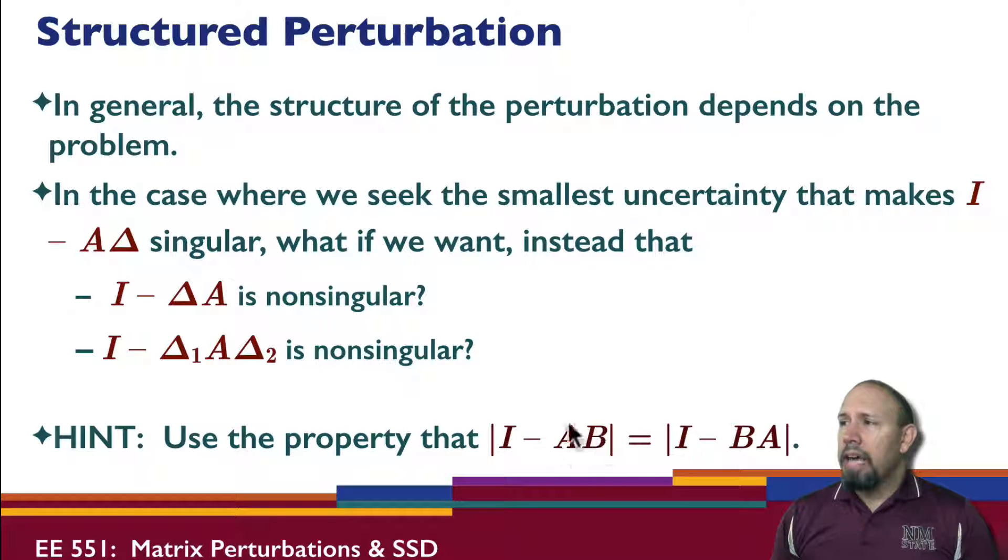Even though AB and BA do not commute, and in fact, the product AB might, this will have to be square otherwise you can't subtract, but the product of AB may be even a different size than the product BA. We will use this property in evaluating the structured perturbations.